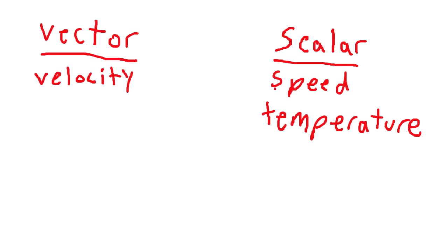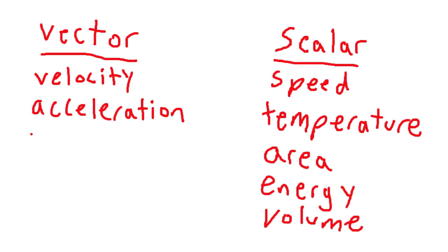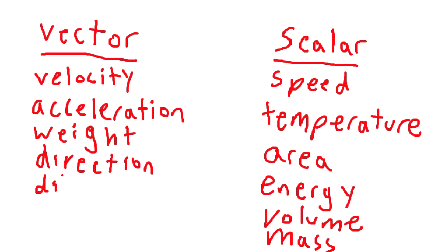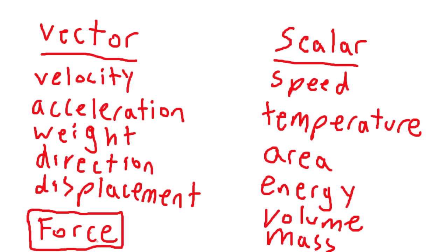There are tons more scalar values and vector values. More scalar values would be area, energy, volume. These are all values that only contain a magnitude. Some more vector ones are acceleration. Weight is also considered one, which by the way, weight is different from mass. Mass is a scalar and weight is a vector. It's a little bit confusing, the difference, but you don't need to understand it right now. Direction is also one. Displacement. The big one I want to talk about is force. That's the reason why I brought this whole thing up, because I wanted to talk to you about force. So let me just clear this all out. Hopefully you understand vector and scalar right now.